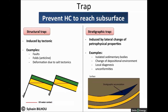The trapping mechanisms for many petroleum reservoirs have characteristics from both categories and can be known as combination traps. Stratigraphic traps are formed as a result of lateral and vertical variations in the thickness, texture, porosity, or lithology of the reservoir rock. Examples of these types of traps are an unconformity trap, a lenticular trap, or a reef trap.